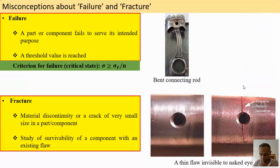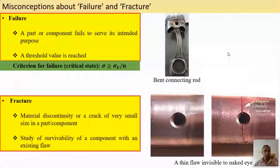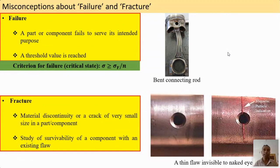I'm on slide five. You see a connecting rod with a piston where the connecting rod has bent — it has buckled. We call this failure, even though there is no separation of materials. Failure is a broad term: it doesn't require material separation; it can be severe distortion so the component can't serve its intended purpose — like a dent in a car or a bent wheel rim.